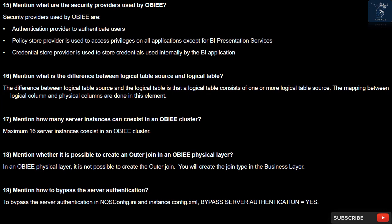Question 18: Is it possible to create an outer join in an OBIEE physical layer? In an OBIEE physical layer, it is not possible to create an outer join. You will create the join type in the business layer.